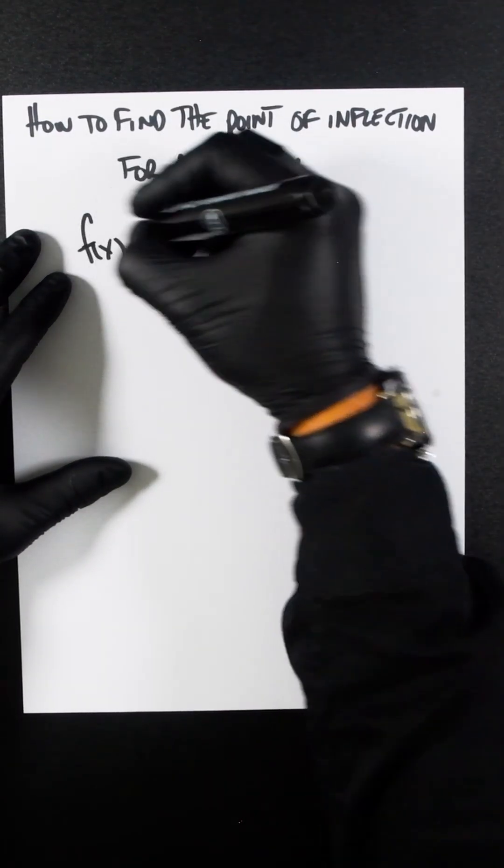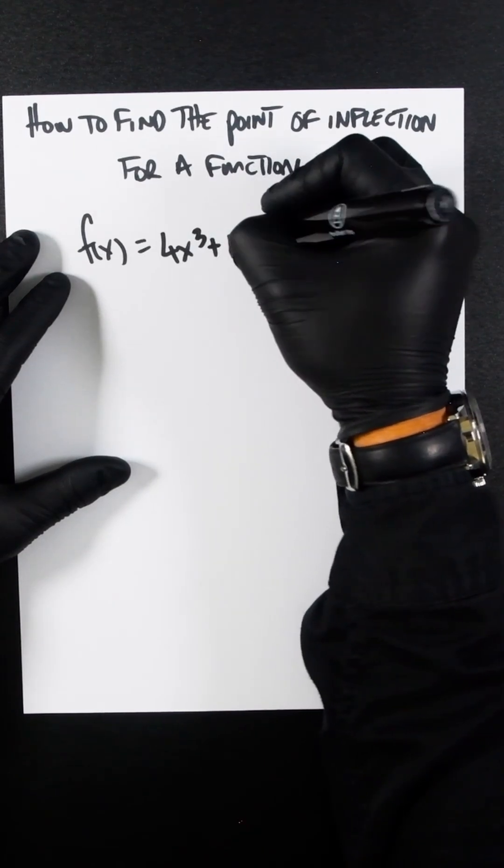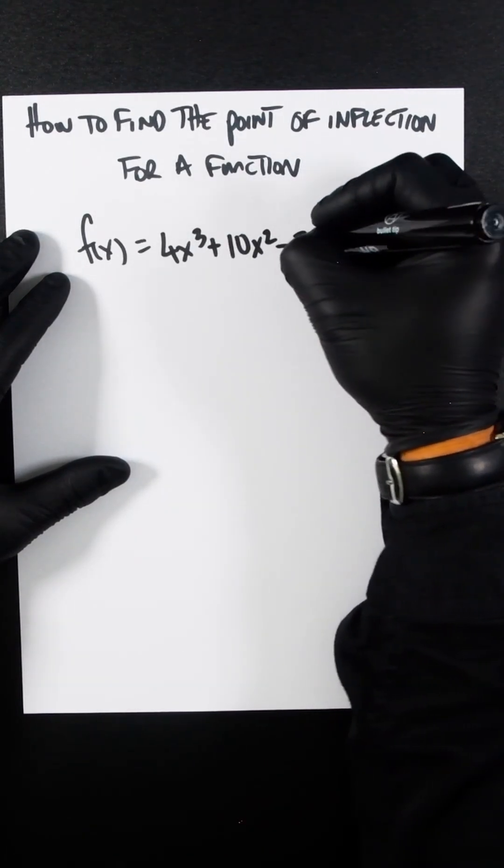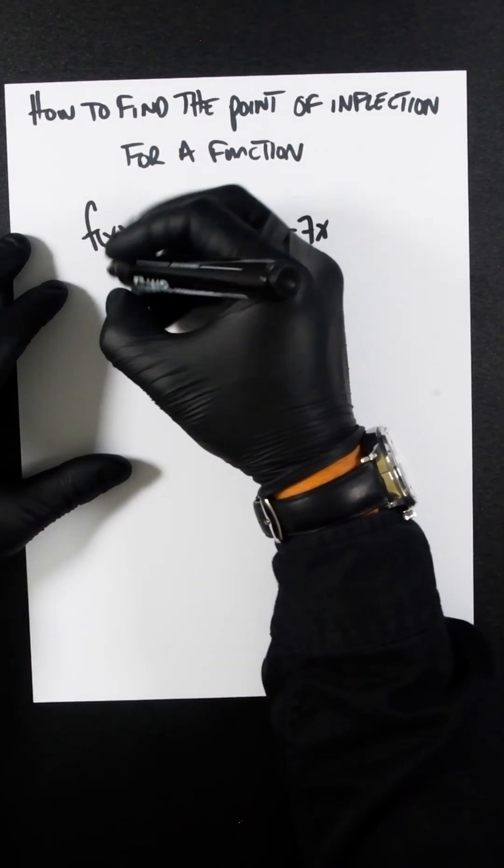So let's say we've got a function f(x) = 4x³ + 10x² - 7x. The first thing that you do is differentiate it once.